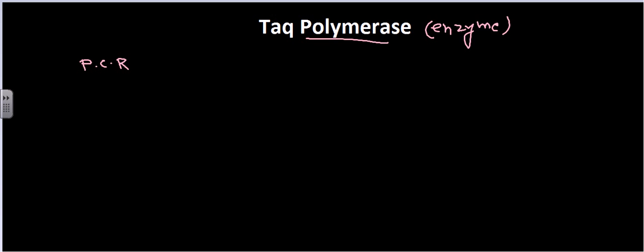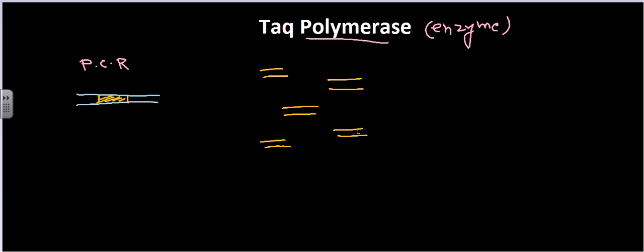PCR is for amplification of a particular gene segment. For example, if this is a long DNA sequence and somewhere in the middle there is a target gene of interest, using PCR we can amplify that target DNA sequence and get many copies of just that targeted segment instead of the whole DNA sequence.